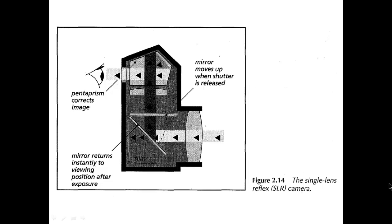A camera is actually a smaller version of the larger camera obscura. A mirror is used to ensure that the image is viewed right side up, and instead of an artist drawing the image inside, the picture is rather burned into light-sensitive film or paper.